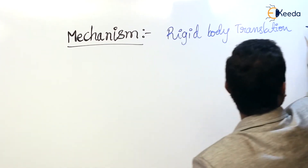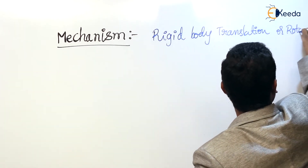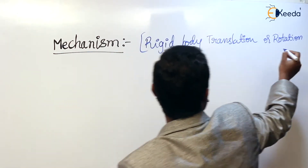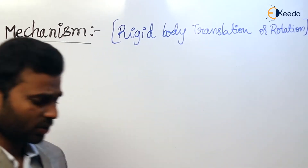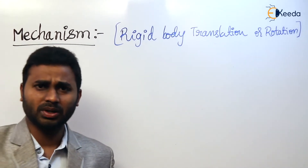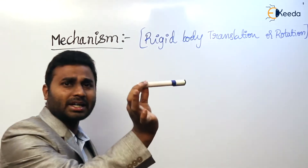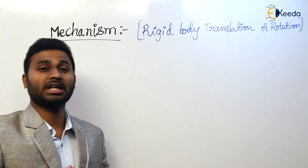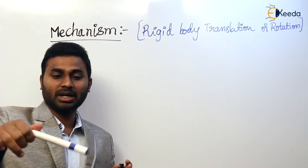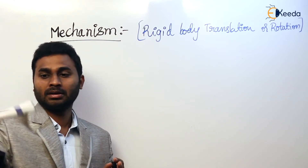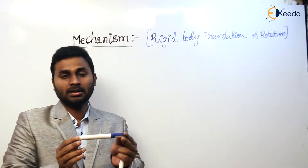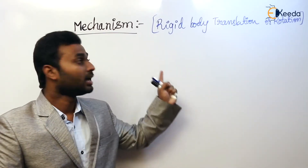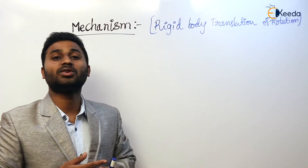Mechanism is rigid body translation or rotation. For example, this is a marker — if I throw this marker, as a rigid body it will move, so that is known as rigid body translation. If the very same marker I rotate like this, then it is called rigid body rotation. If such a phenomenon takes place in a structure, then it is known as mechanism.